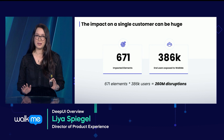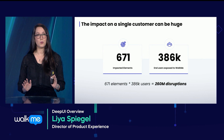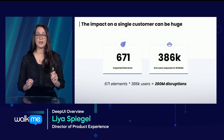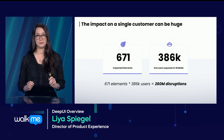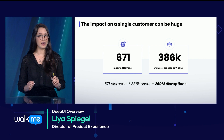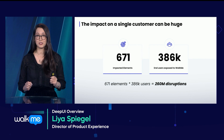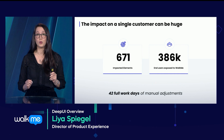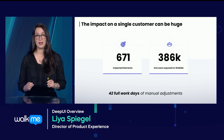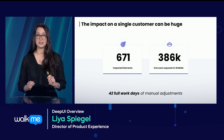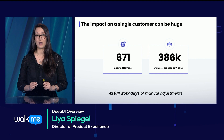To quantify what fixing this would look like, we can conservatively assume that it takes about 30 minutes to fix each item. I say conservatively because to find out what's broken, you would need to go in and QA every single item that you've ever built. But if we still assume it takes only 30 minutes per item to find it, recapture, test, and publish, that's still 42 full workdays. And this is just one release on one application out of 45 business apps that this customer uses WalkMe on.